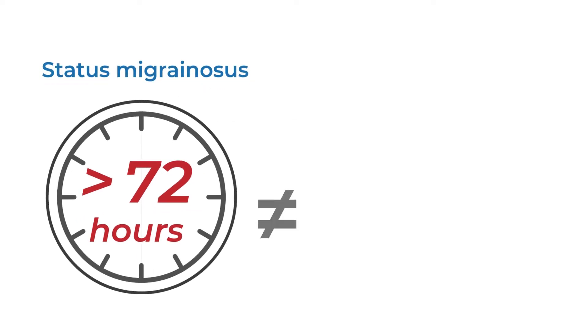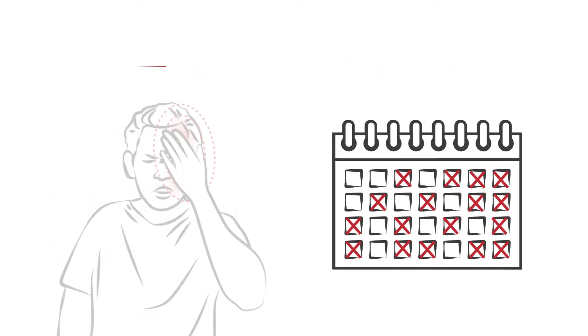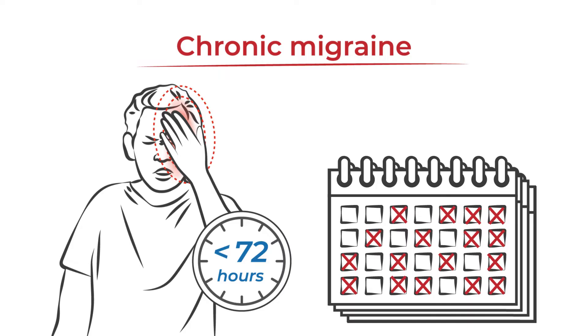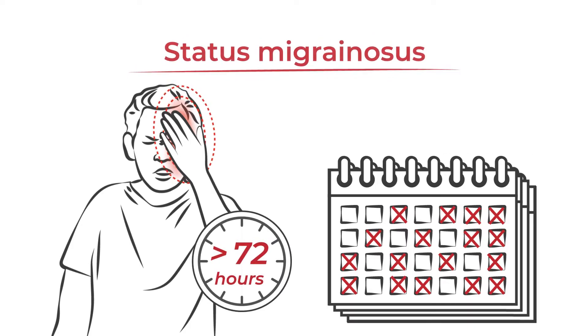Status migranosis differs from chronic migraine. With chronic migraine, a person will have 15 or more headache days per month but the attacks do not last more than 72 hours each. A person with chronic migraine can develop status migranosis.